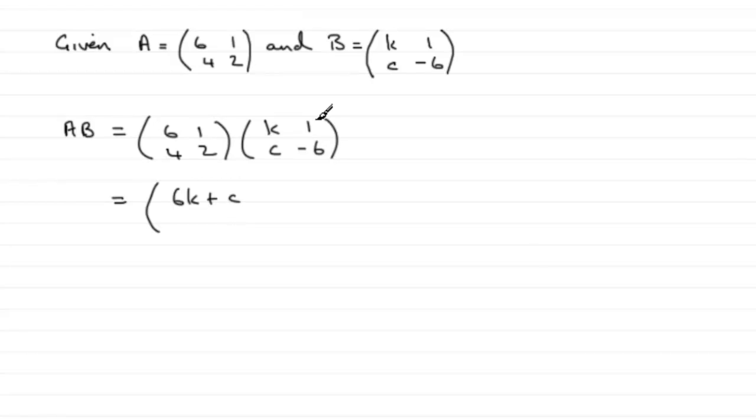If I do top row times second column, we've got 6 times 1 plus 1 times minus 6, and that's going to give us 0. So 0 there.